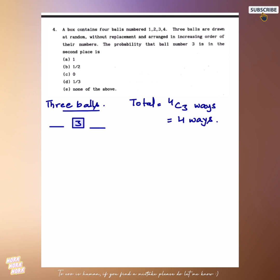Also we see that after 3 there is only one number left which is 4, so there is only one way of putting it and before 3 we can take either 1 or 2, so there are total 2 ways. So the required probability is 1 by 2.